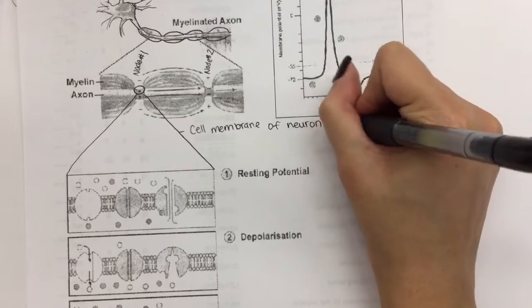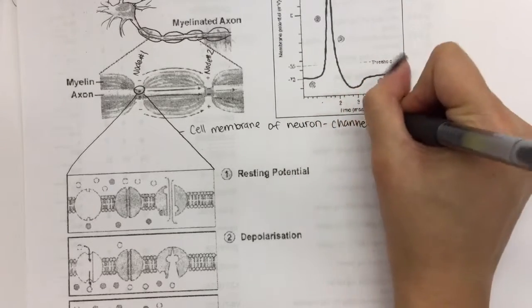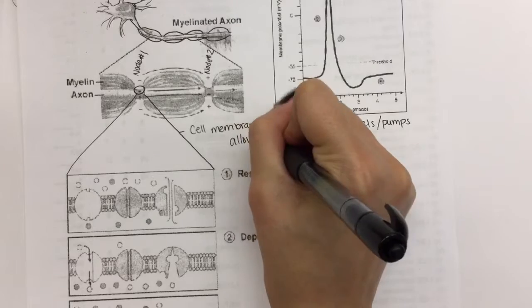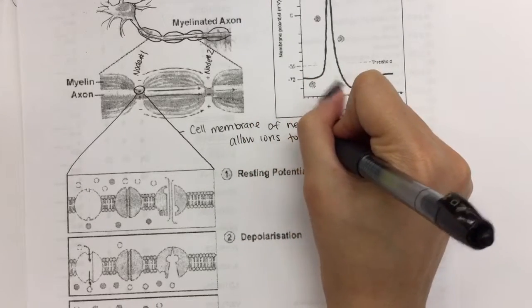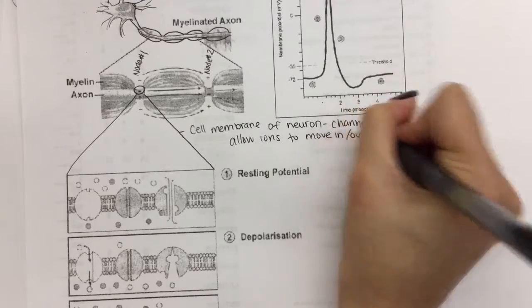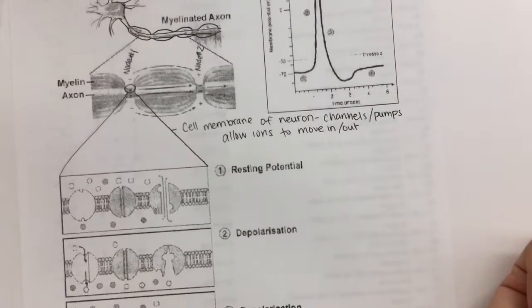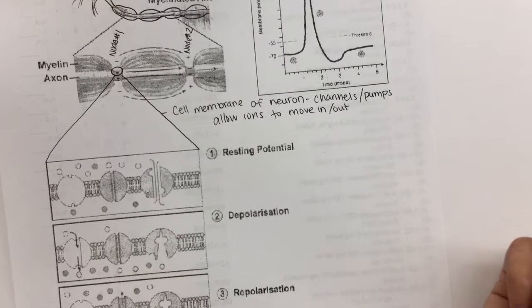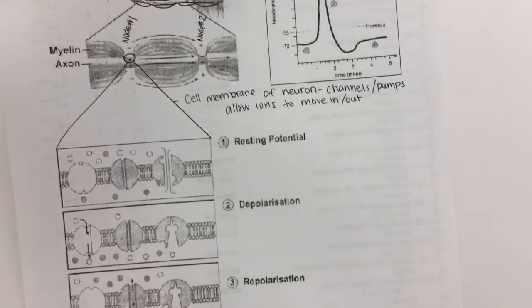This is the cell membrane of a neuron. They contain channels or pumps that allow ions to move in or out. Do you guys remember what channels are from like geography, like channels or straits or that kind of stuff? Remember like countries fight over channels? It's a body of water, like a passageway between land that allows ships to move through quickly. So a channel in this case allows ions to move through quickly. What are the channels of the bones called? The Haversian canals? It allows for the blood vessels to pass through.